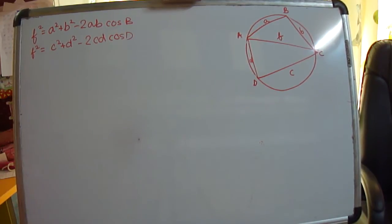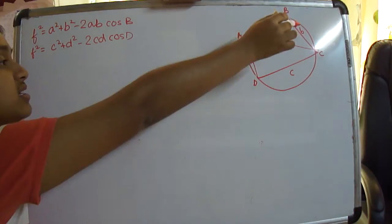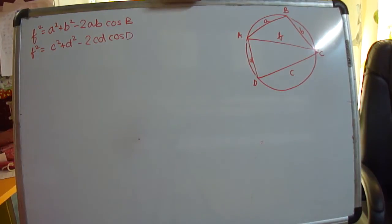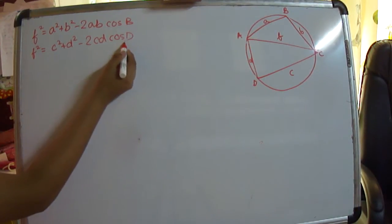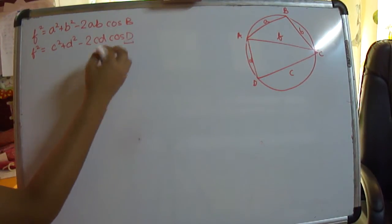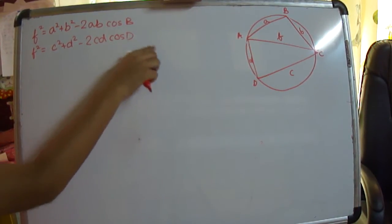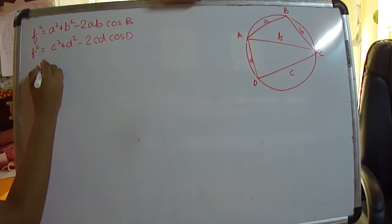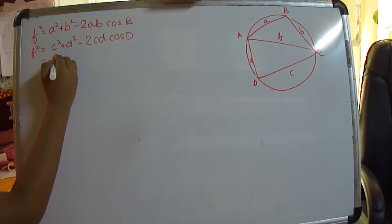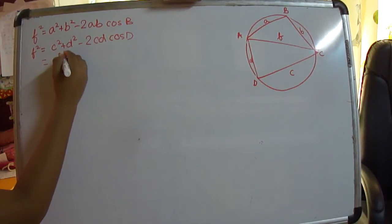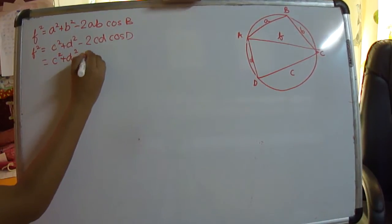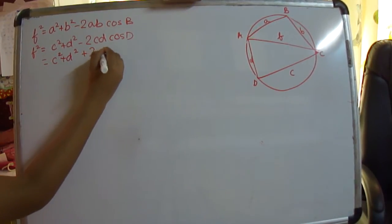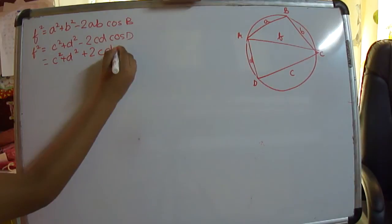We know that in a cyclic quadrilateral, the opposite angles are supplementary. So we can write cos D as cos(180° − B), and we know that cos(180° − θ) equals −cos θ. So this can be rewritten as C² plus D² plus 2CD·cos B.